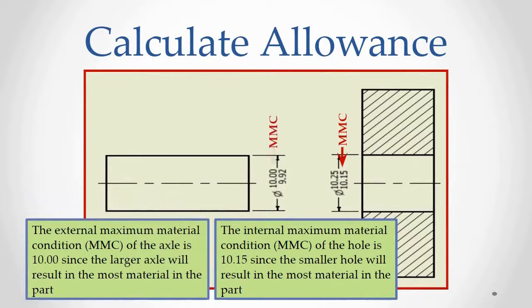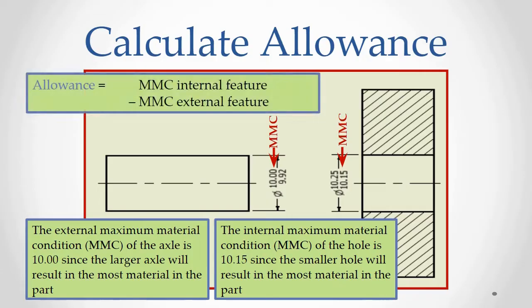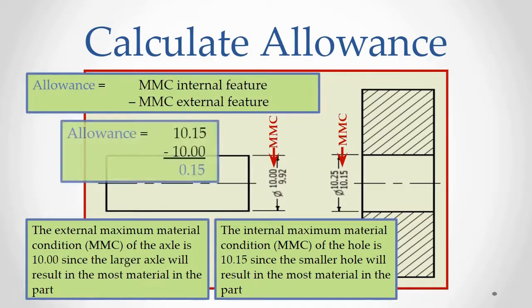This example shows a clearance fit, in which the MMC of the hole, the smallest allowable dimension, is 10.15 millimeters, and the MMC of the peg, the maximum allowable dimension, is 10.00 millimeters. When the MMC of the peg, the external feature, is subtracted from the MMC of the hole, the internal feature, we find an allowance, or a minimum clearance of 0.15 millimeters.